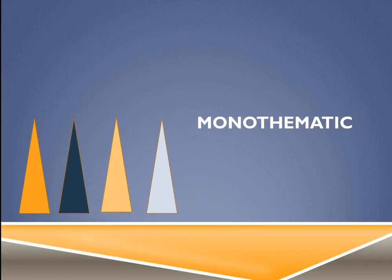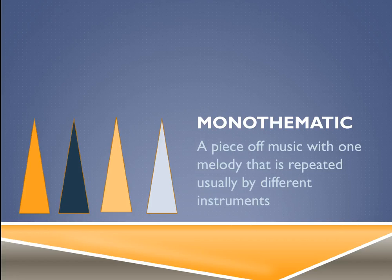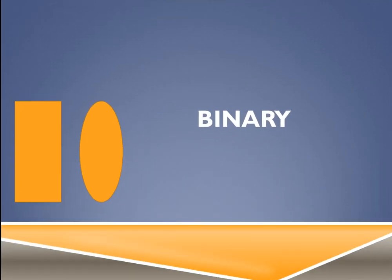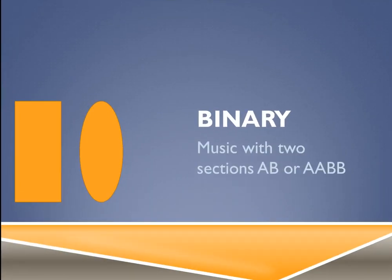Monothematic — you can see four little triangles, all the same size — means a piece of music with one melody that is repeated, usually by different instruments. A very famous example is Ravel's Bolero, where the same melody is repeated by different instruments all the way throughout.